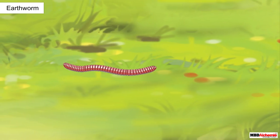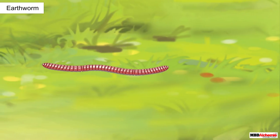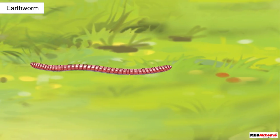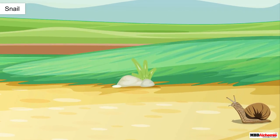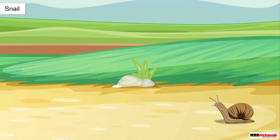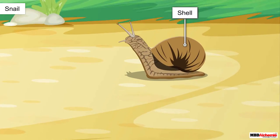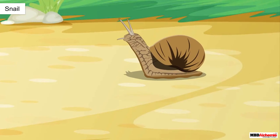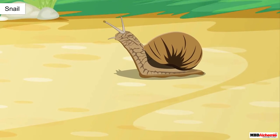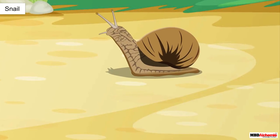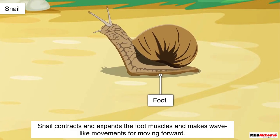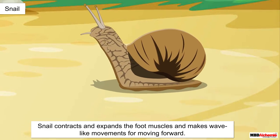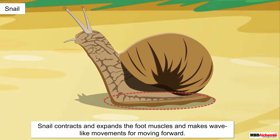Like an earthworm, many other animals have special features that assist them in movement. Let us observe the movement of some of these animals. Let us first look at the movement of a snail. Like an earthworm, a snail too does not have any bones. It has a slimy body and a shell on top. The snail moves with the help of a thick muscular structure present at the bottom of its body called foot. It contracts and expands the foot muscles and makes wave-like movements for moving forward.